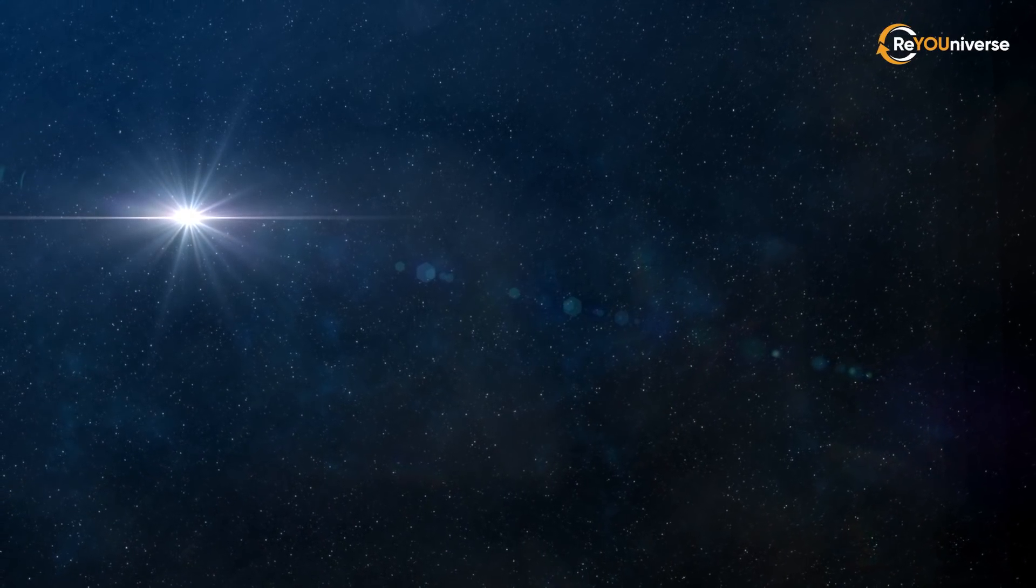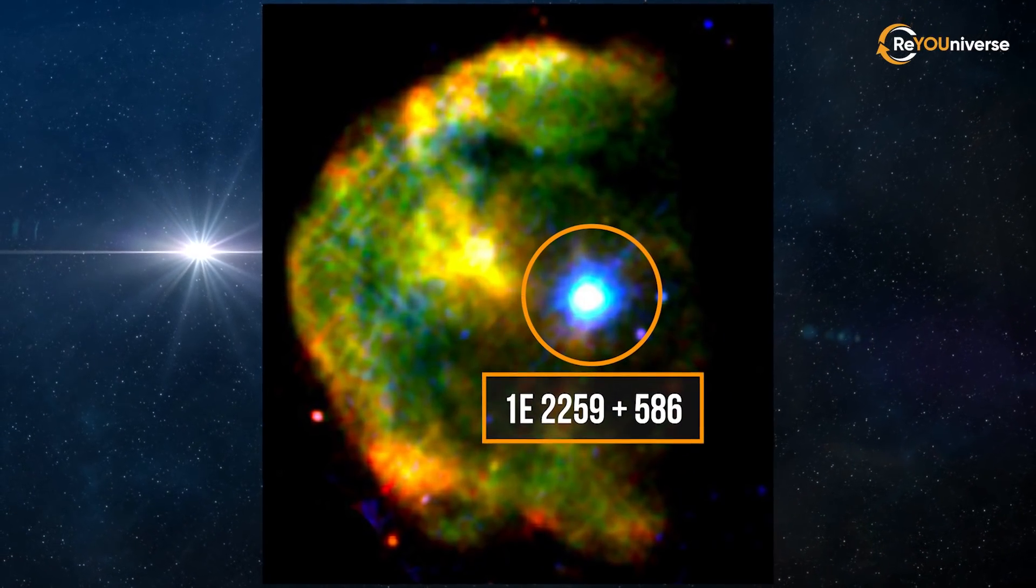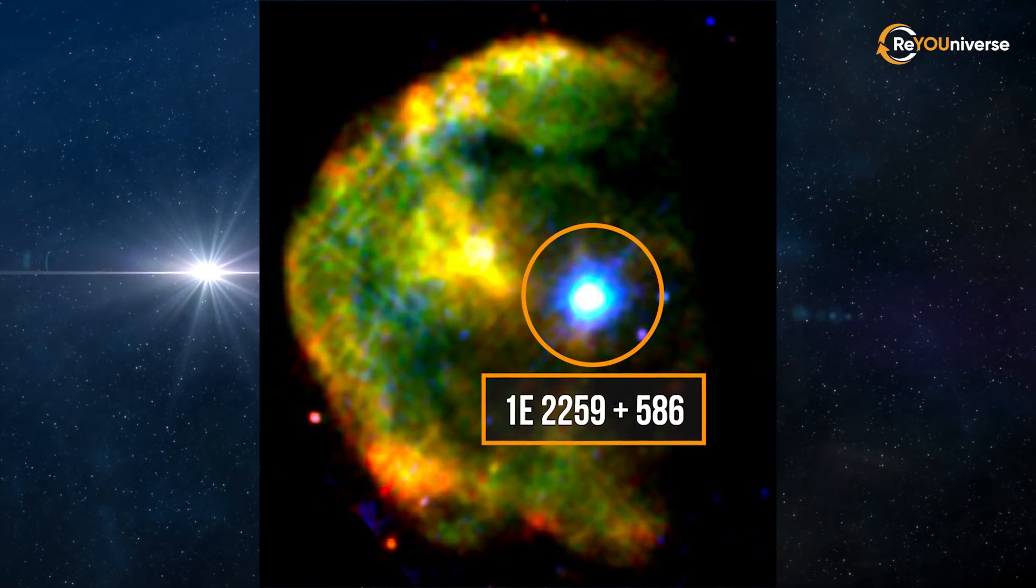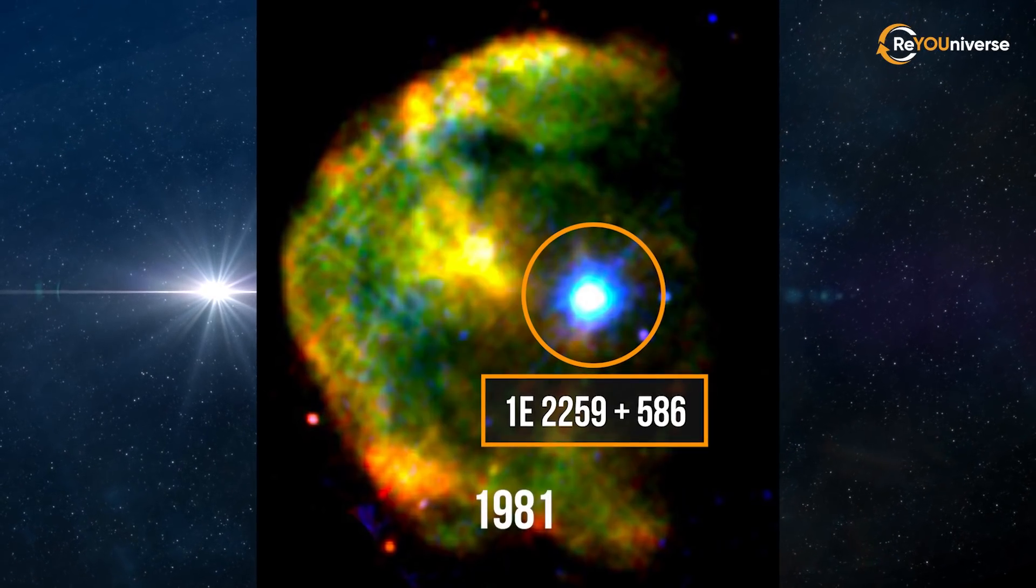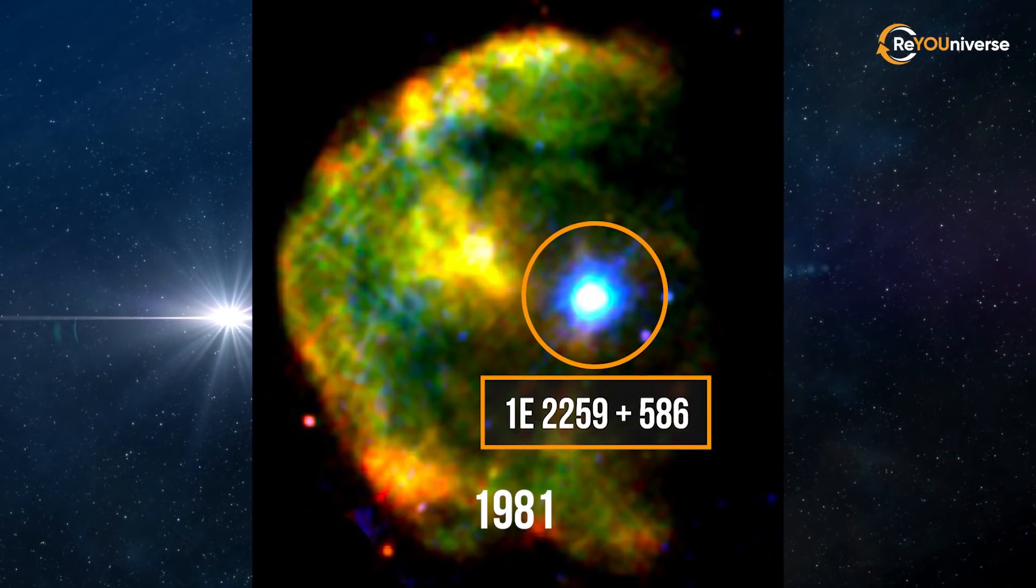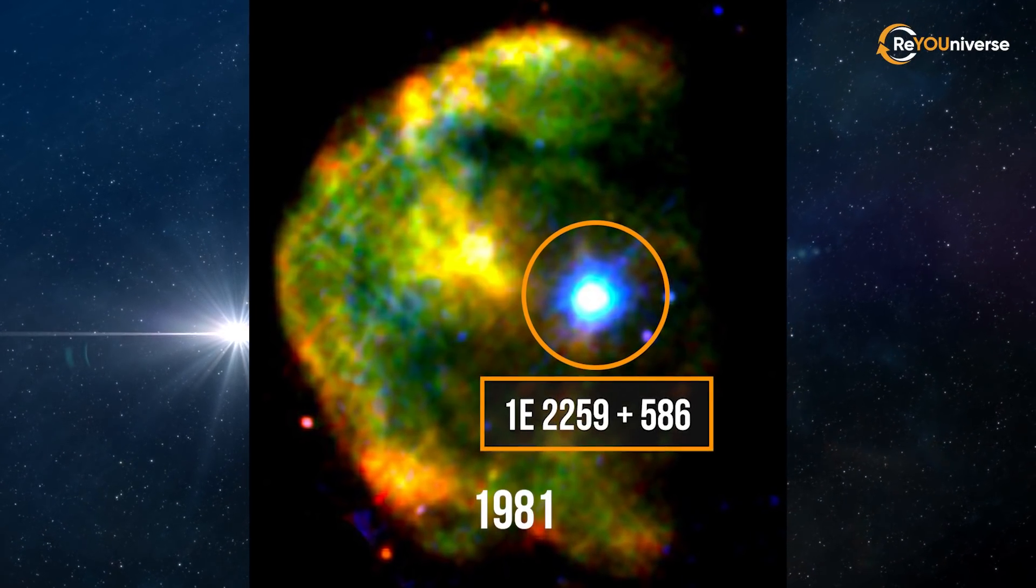The closest known magnetar, called 1E2259 plus 586, was discovered in 1981, long before scientists created magnetar theory.